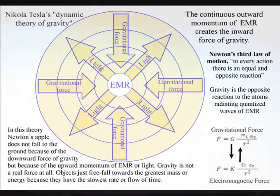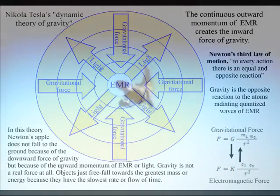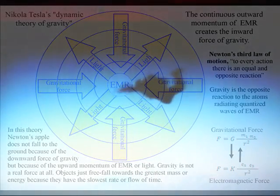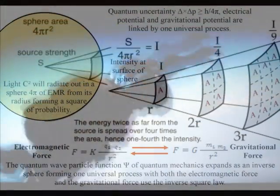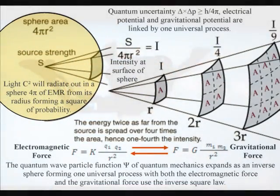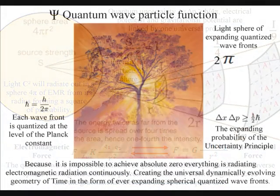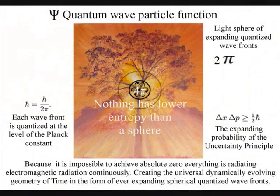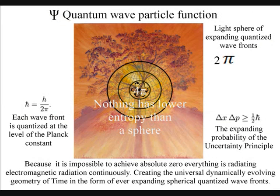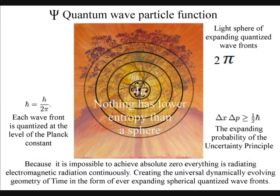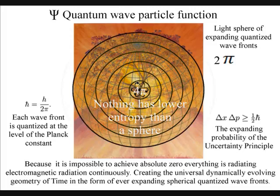In this theory, gravity is a secondary force to the electromagnetic force. Objects just freefall towards the greatest mass or energy because it has the slowest rate that time flows.